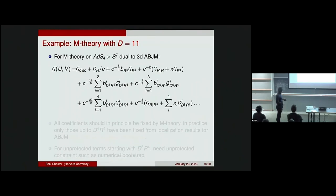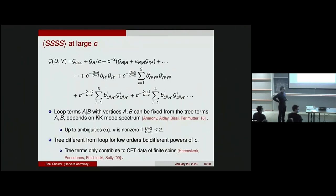Let's give an example: a theory related to M-theory with bulk dimension 11. There was a question about whether this could move into a higher spin regime. Right now I'm assuming you only have massless spins two or less. You could do a separate analytic bootstrap allowing for higher spins, which we have also done, but I won't be discussing that at the moment.